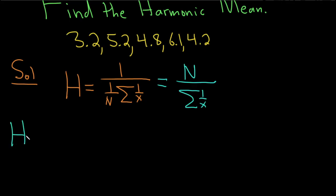Okay, so H is equal to... So n is how many numbers we have. So you have 1, 2, 3, 4, 5 numbers. So it's going to be 5 up top.